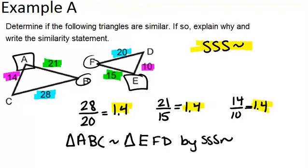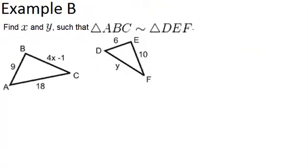Okay, let's go to example B. Find X and Y such that the two triangles are similar. ABC is similar to DEF.